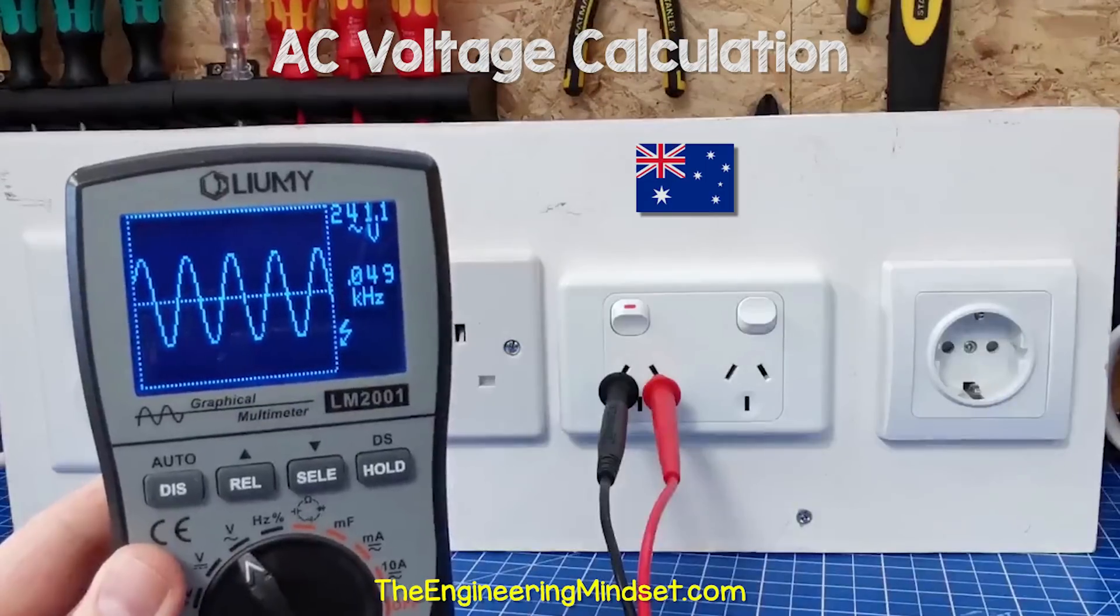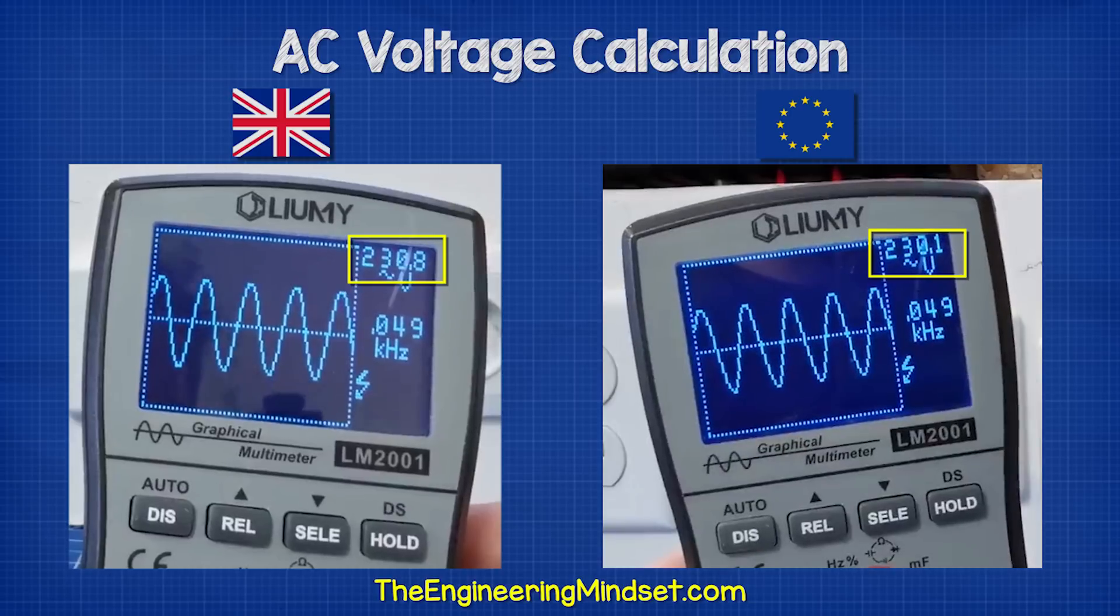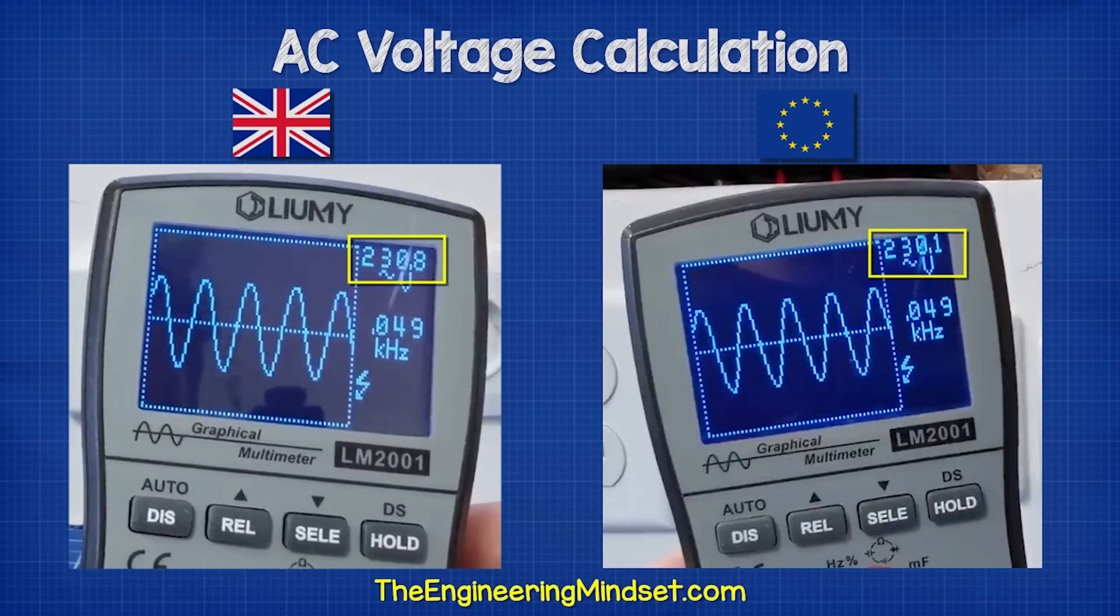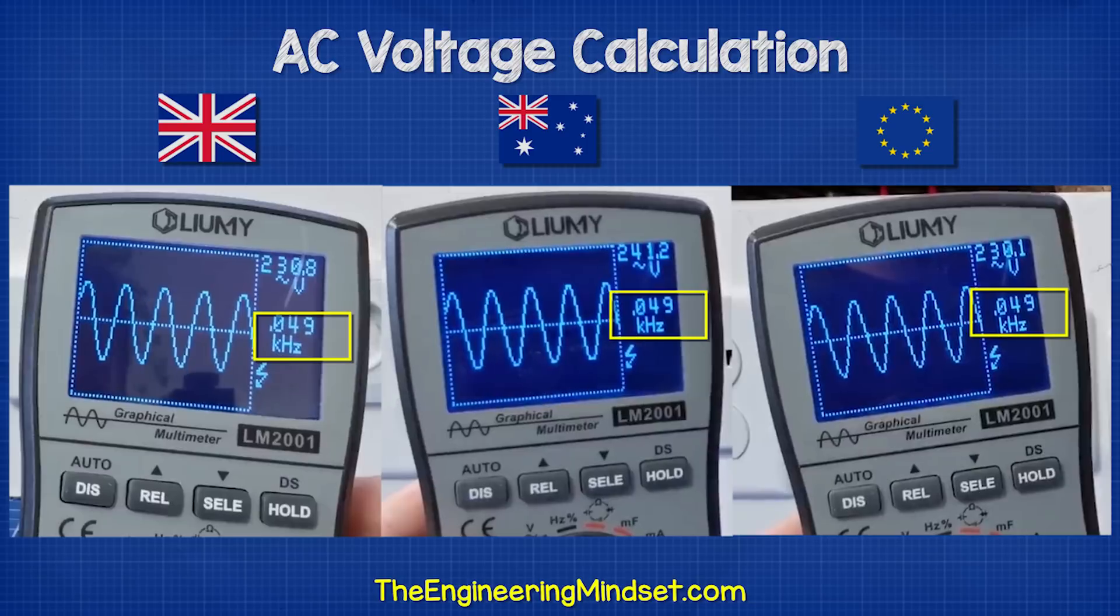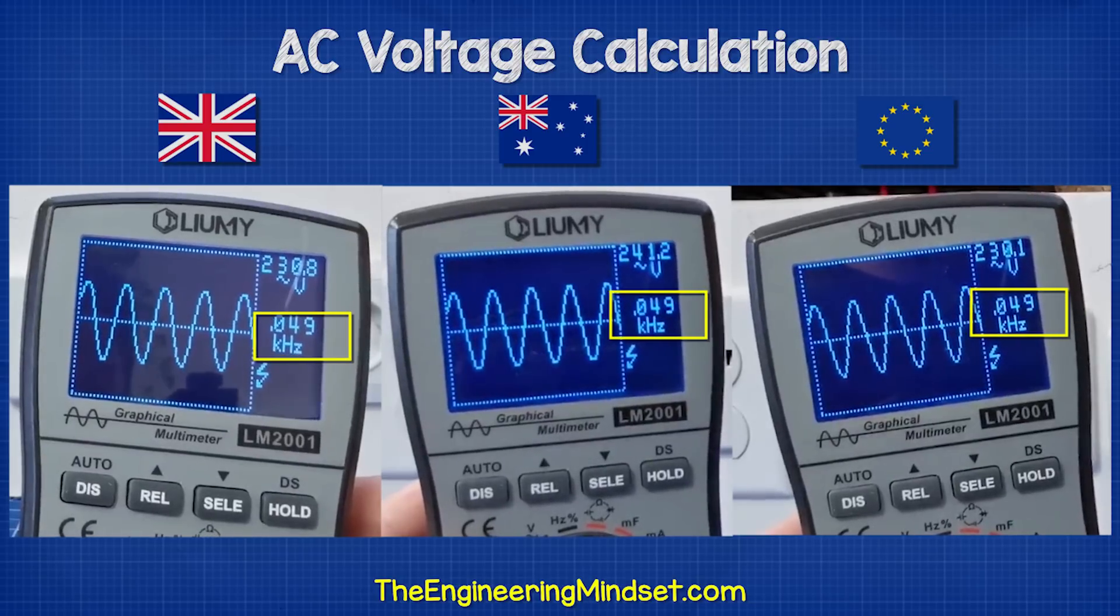Notice that the British and European outlets are 230 volts. The Australian outlet is 240 volts, but all three of these are at a frequency of 50 hertz.